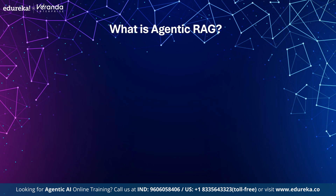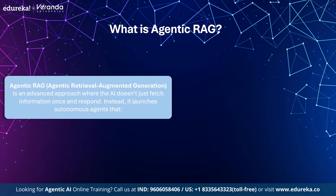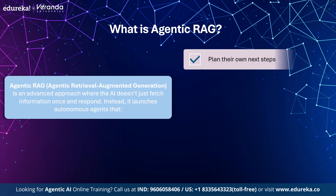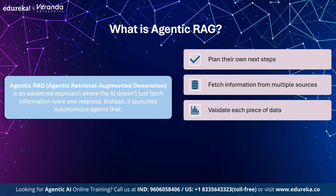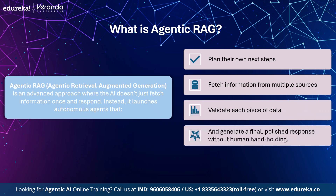What is Agentic RAG exactly? Agentic RAG stands for Agentic Retrieval Augmented Generation. In simple terms, it's a system where your AI doesn't just retrieve information once and spit out an answer. Instead, it spins up autonomous agents that plan their own next steps, fetch information from multiple sources, validate each piece of data, and generate a final polished response without human hand-holding. Agentic RAG transforms a single retrieve-and-generate call into a smart multi-step workflow, so your AI can adapt, correct itself, and tap into new data.